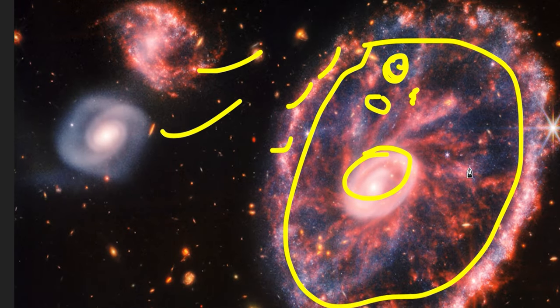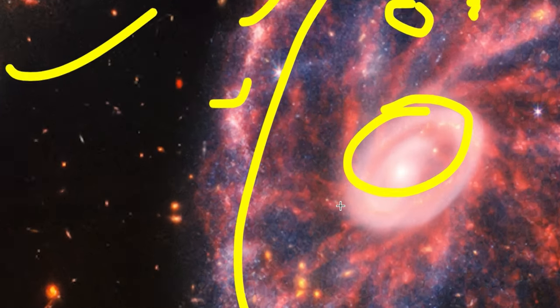The pink areas are silicate dust that is available on Earth, while the blue areas are pockets of young stars and hydrocarbon dust.